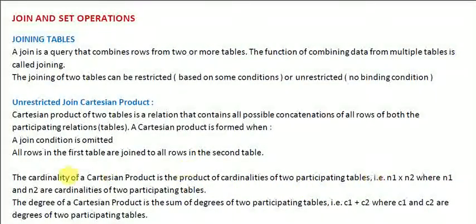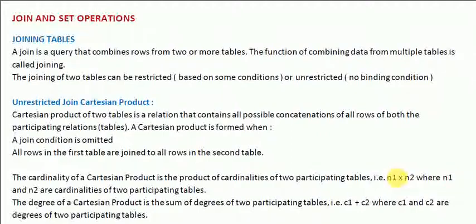Cardinality means the number of rows. The number of rows in the Cartesian product will be N1 multiplied by N2, where N1 is the number of rows in the first table and N2 is the number of rows in the second table. The degree of the Cartesian product is the sum of the degrees of the participating tables.